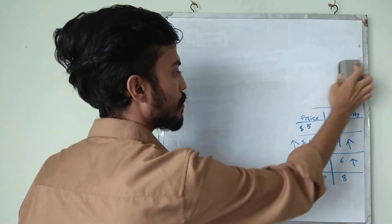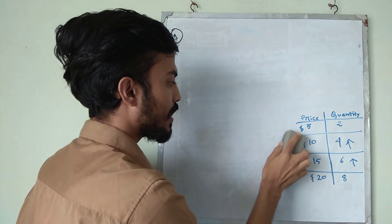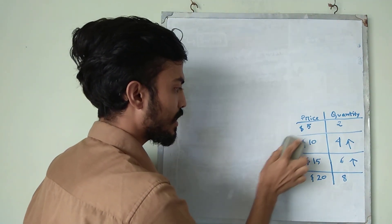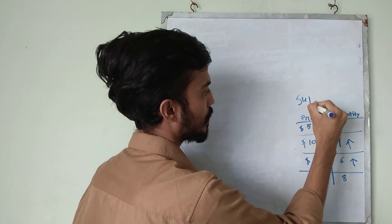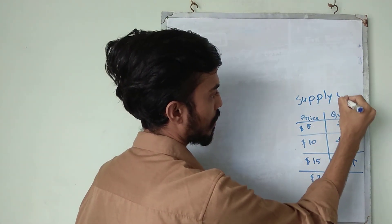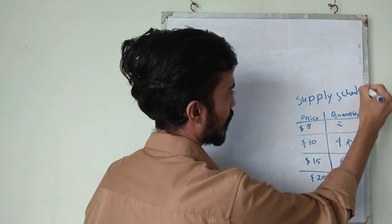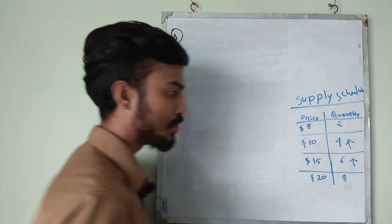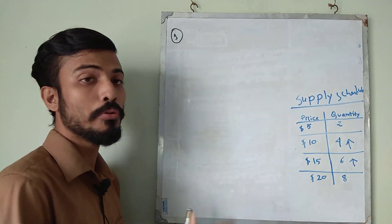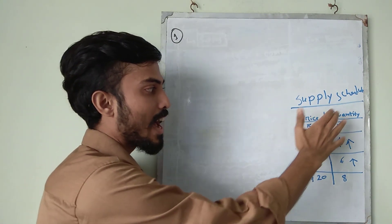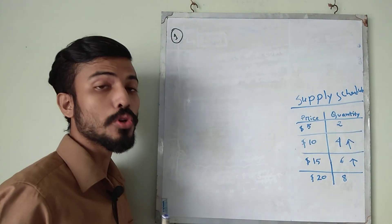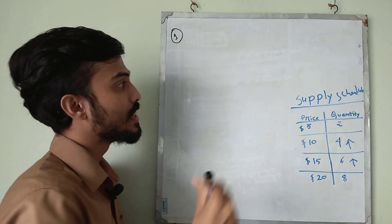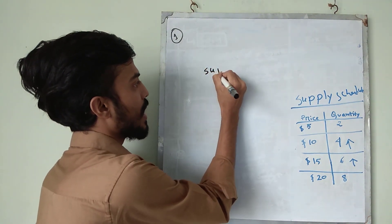So the schedule that I make is also called supply schedule. Now we will put the value of price and quantity in a diagram and this diagram is known as supply diagram.